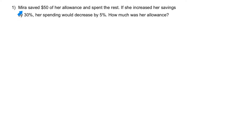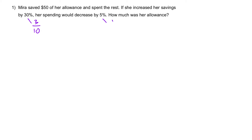Question 1. Mira saved $50 of her allowance and spends the rest. If she increased her savings by 30%, her spending would decrease by 5%. How much was her allowance? Step 1, let's change all the percentages to fractions. 30% is 3 out of 10, and for 5%, it is 1 out of 20.